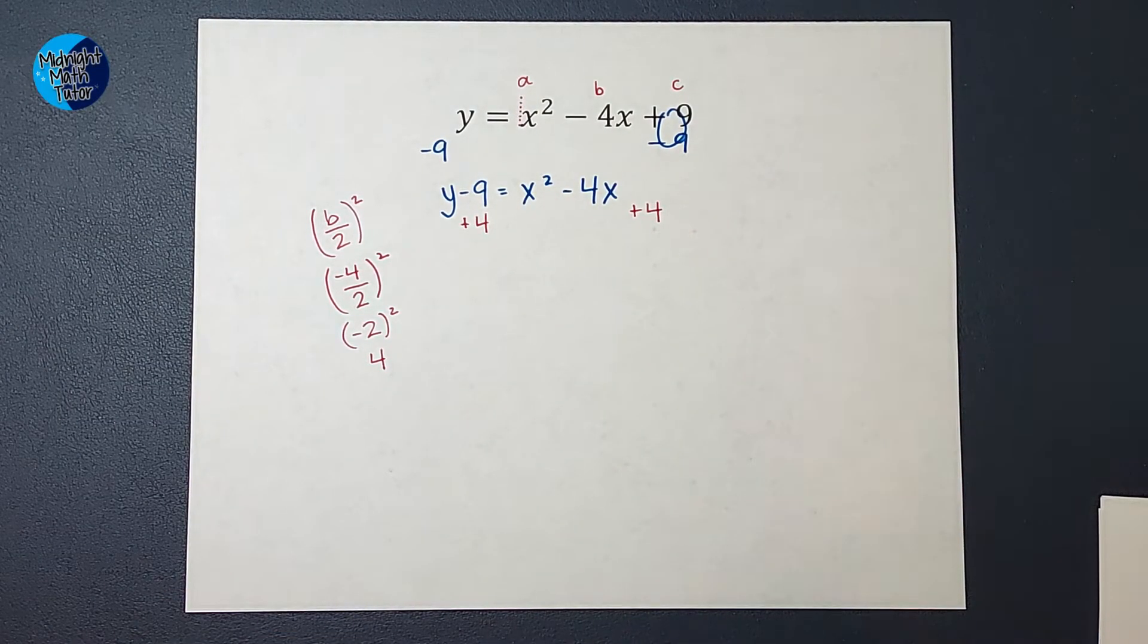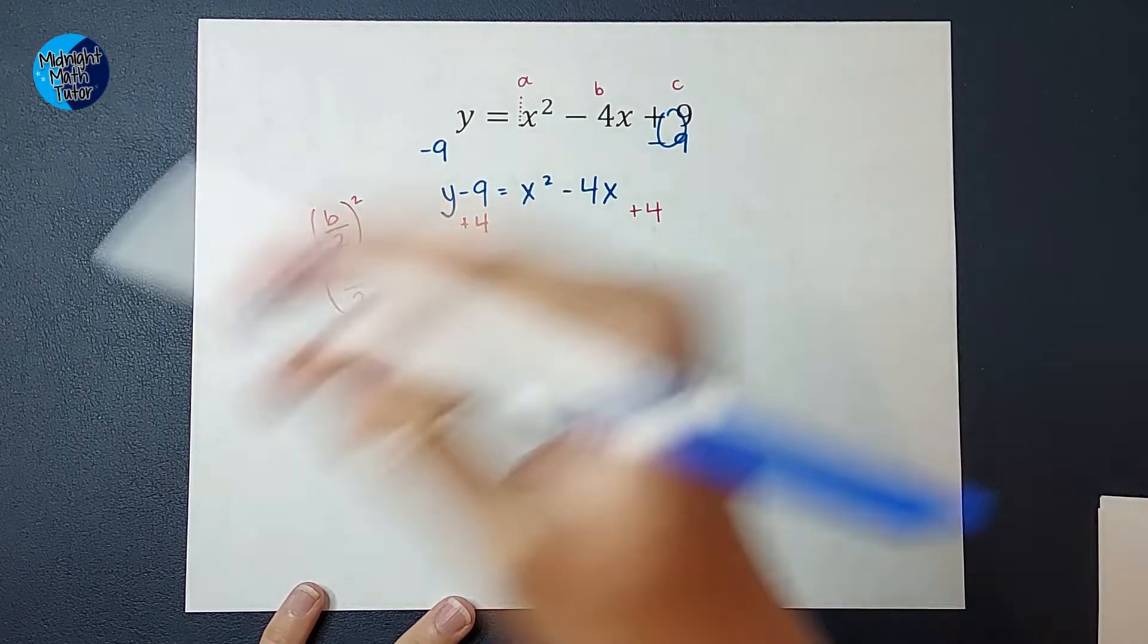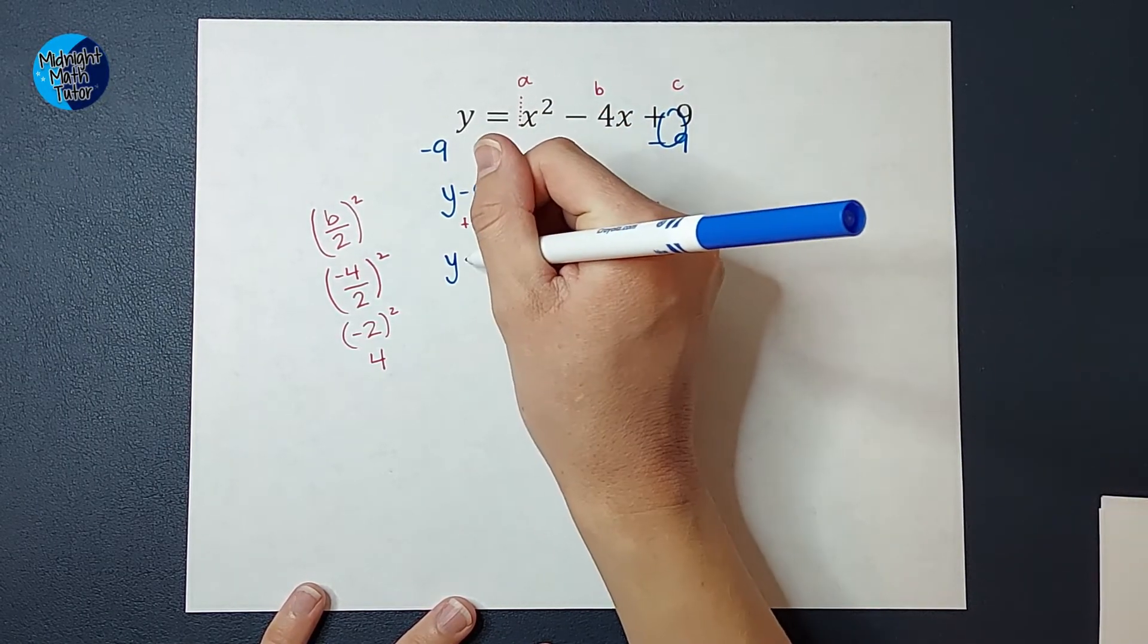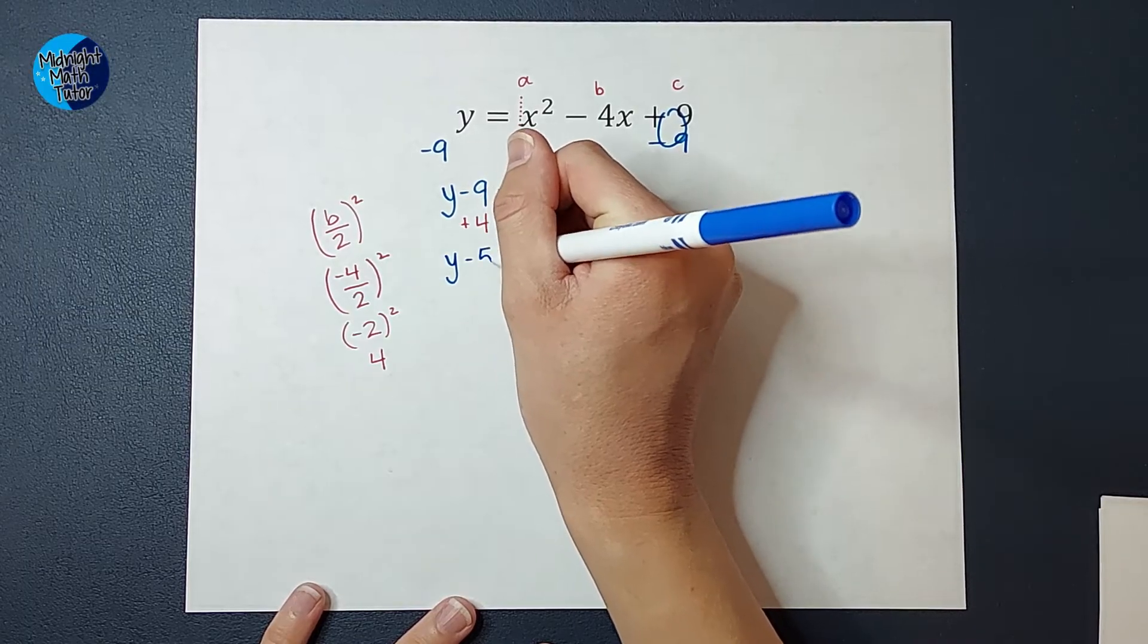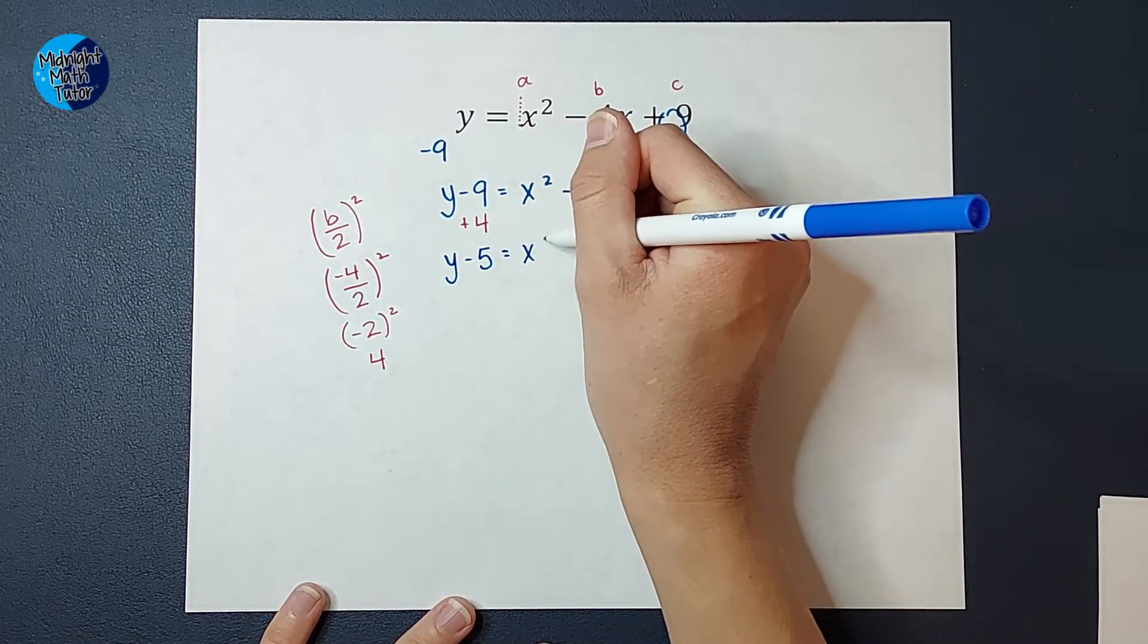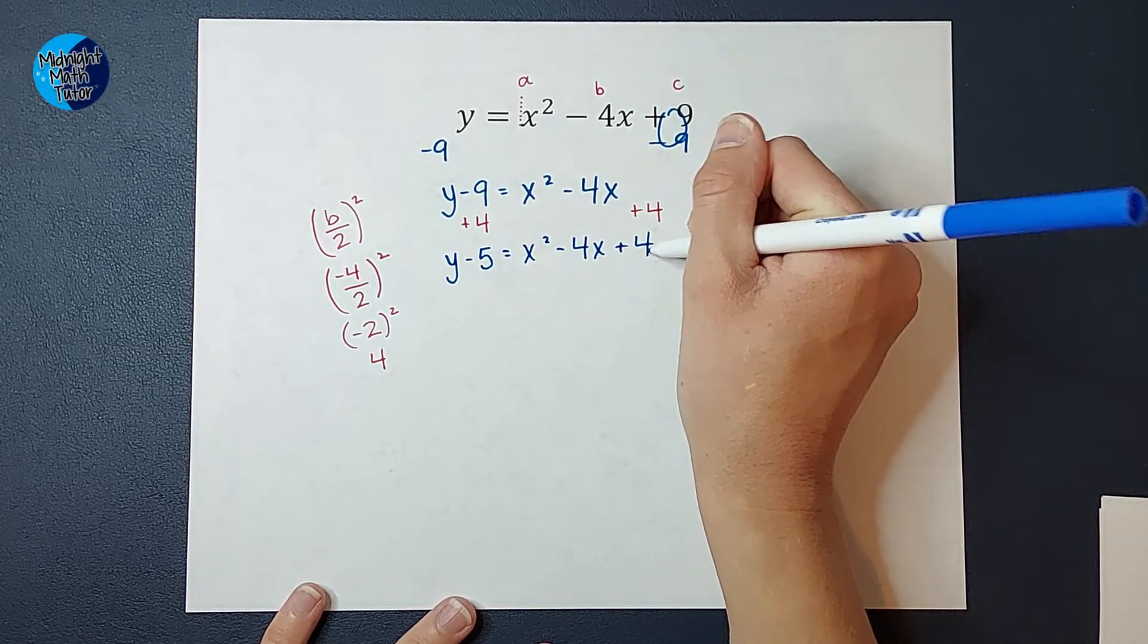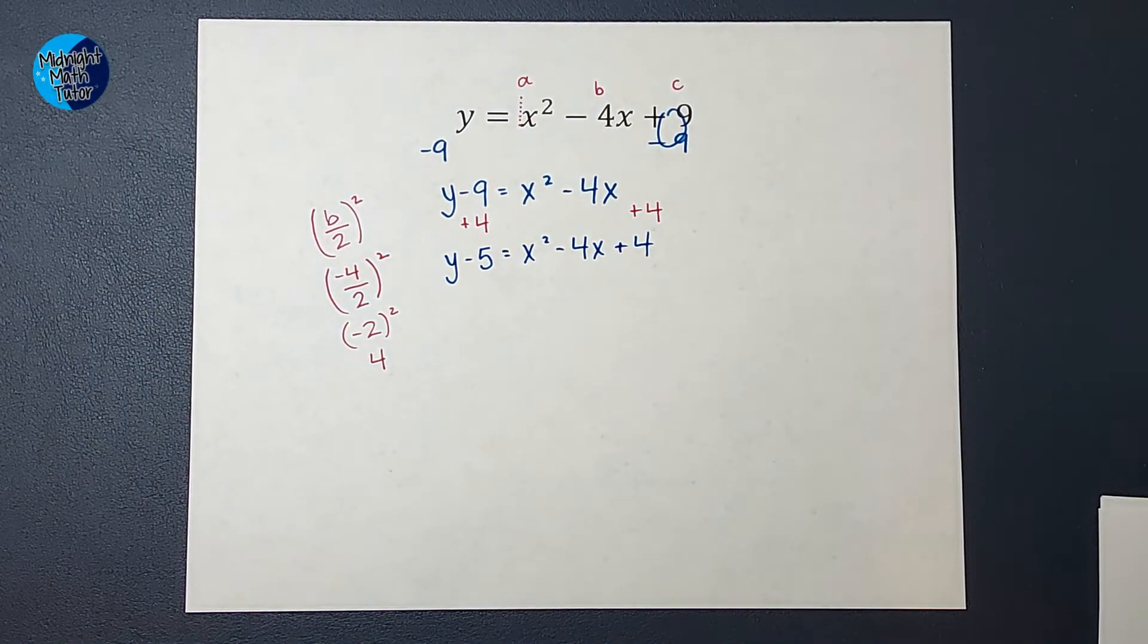I can add whatever I want as long as I add it to both sides. So I'm just picking a number that will help me. So here we have, we're just simplifying this down. I'm going to have y, negative 9 plus 4 gives me a negative 5. So I've got y - 5 on that side equals x² - 4x + 4. None of those can combine because they're not like terms.